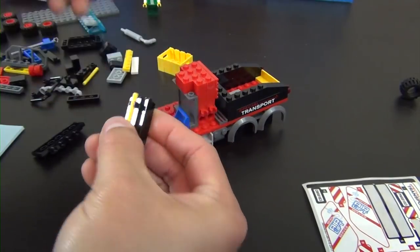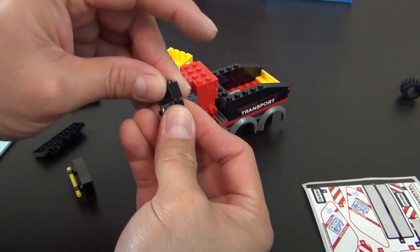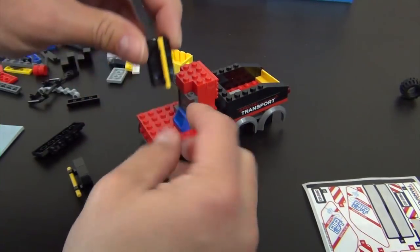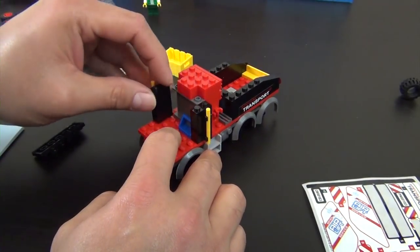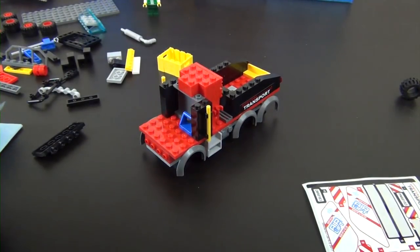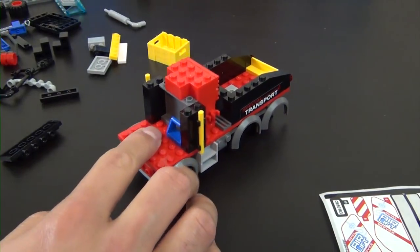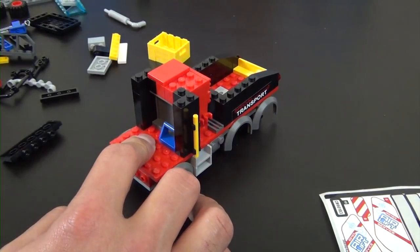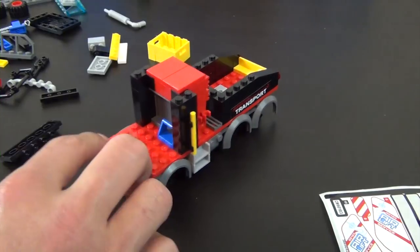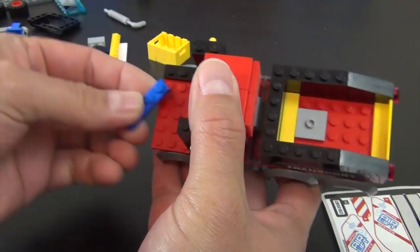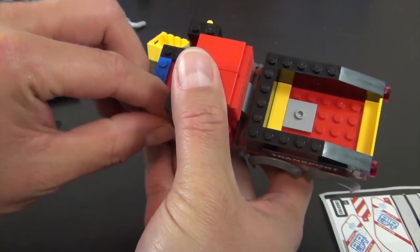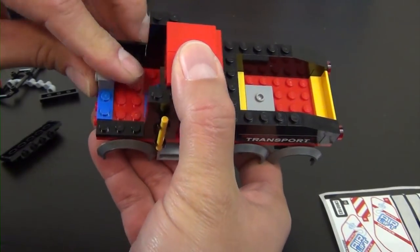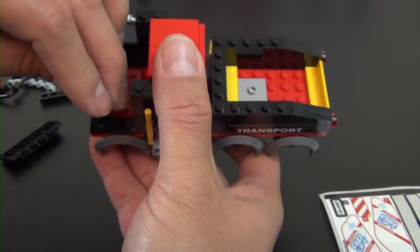We're going to clip on yellow bars. Those two parts go right there. Now we have two more corner bricks. And two of the two by three tiles. Alright. We have a door. We have a brick with studs on the side. A steering wheel. And one more door.